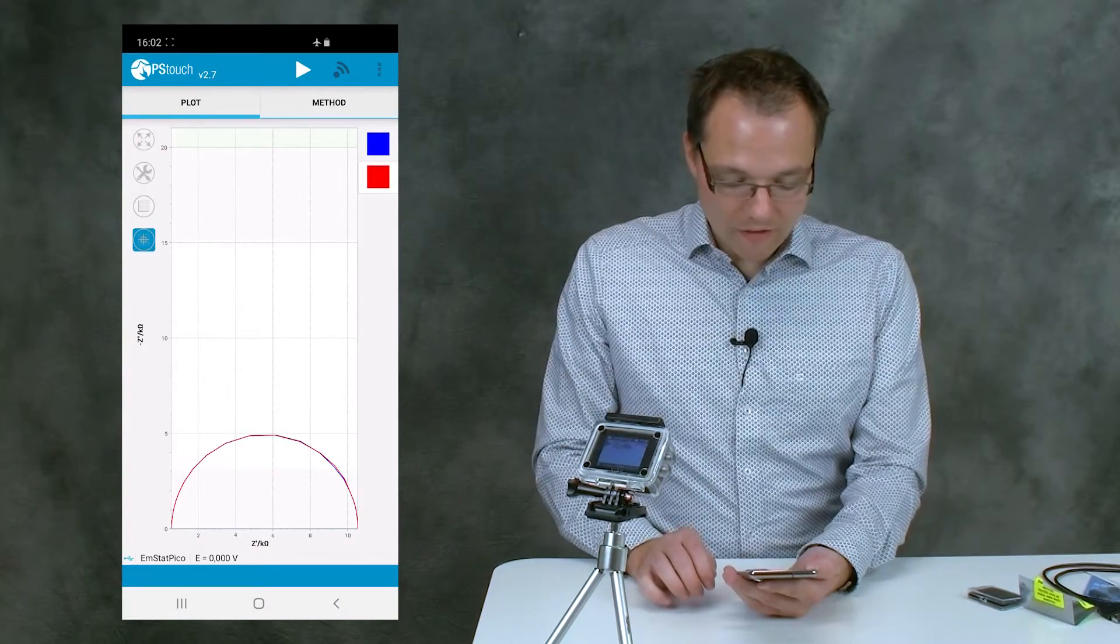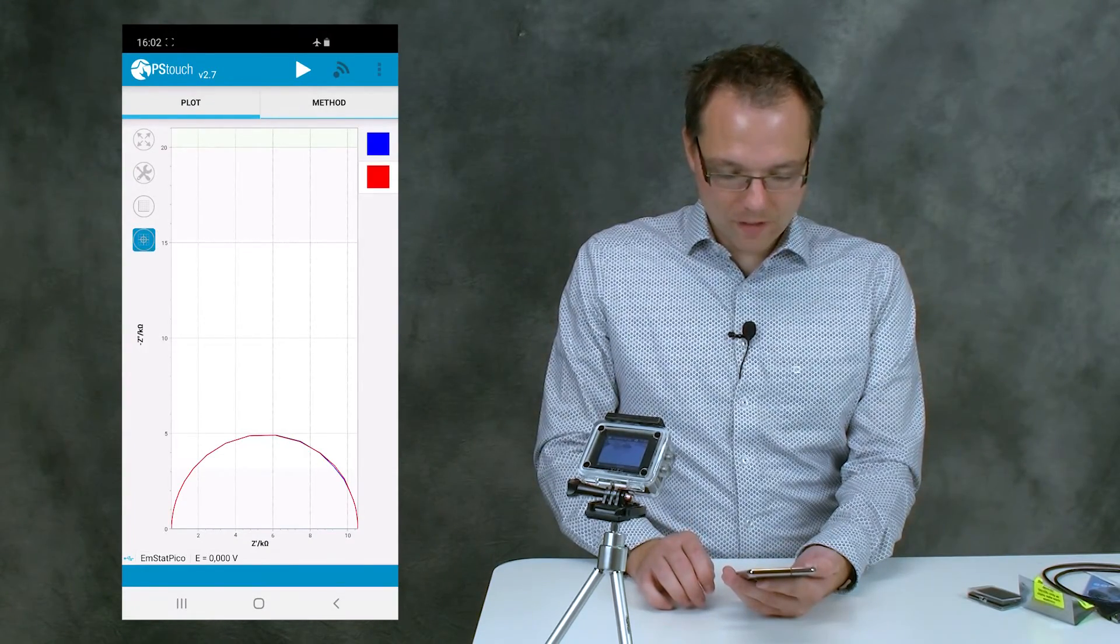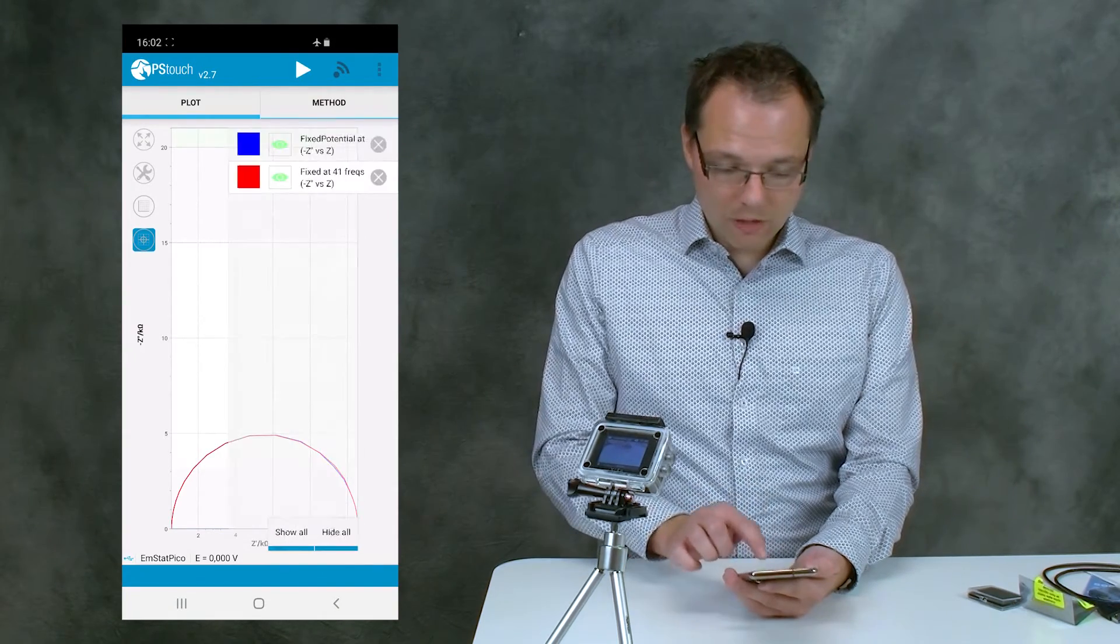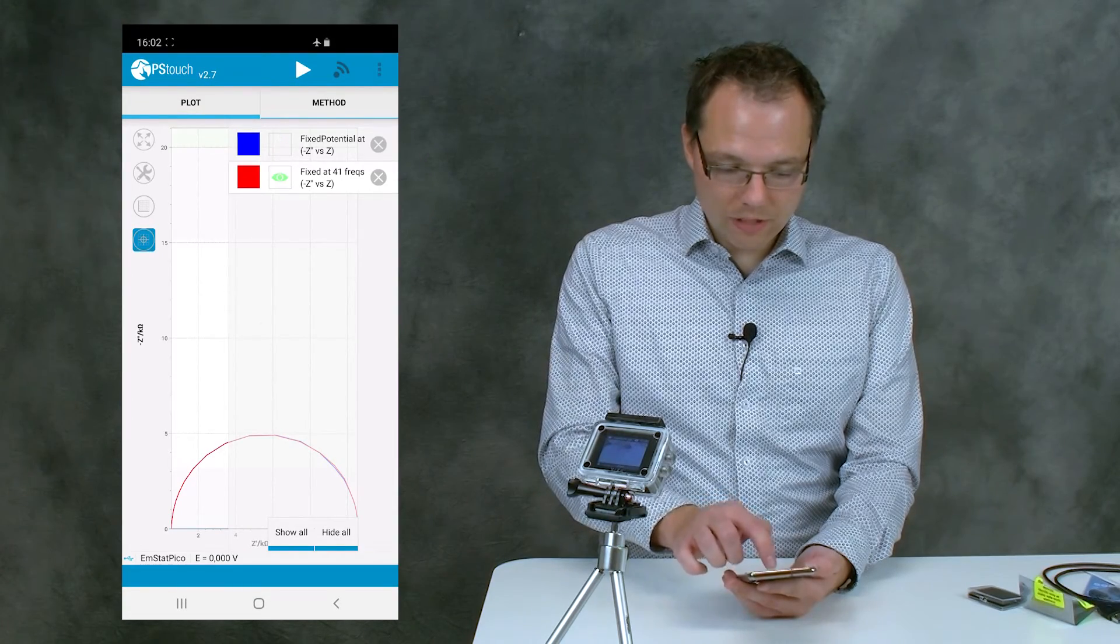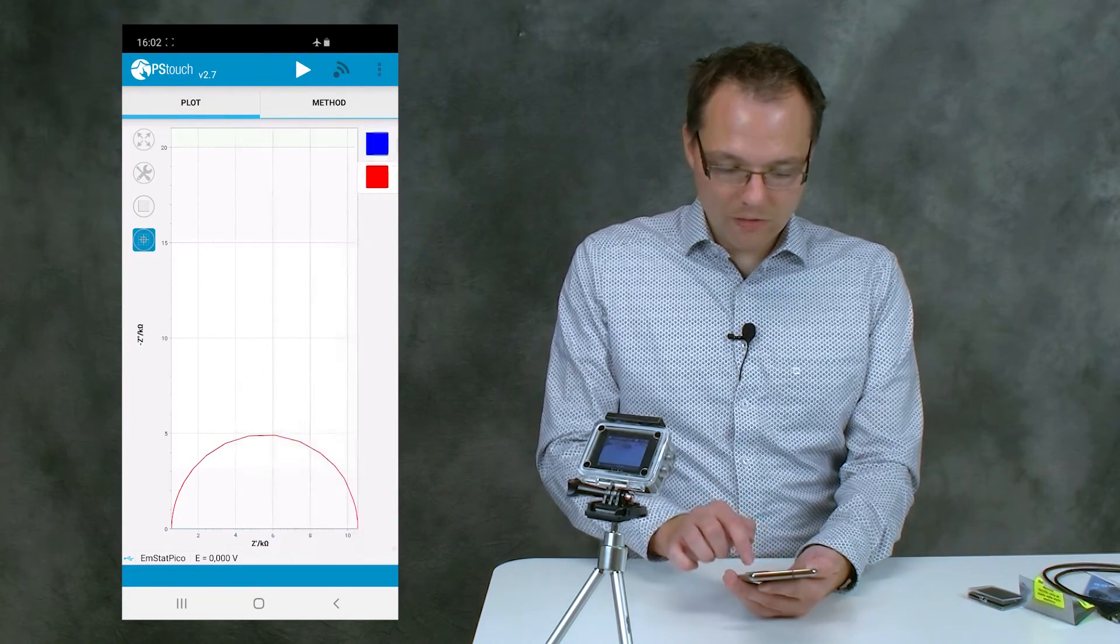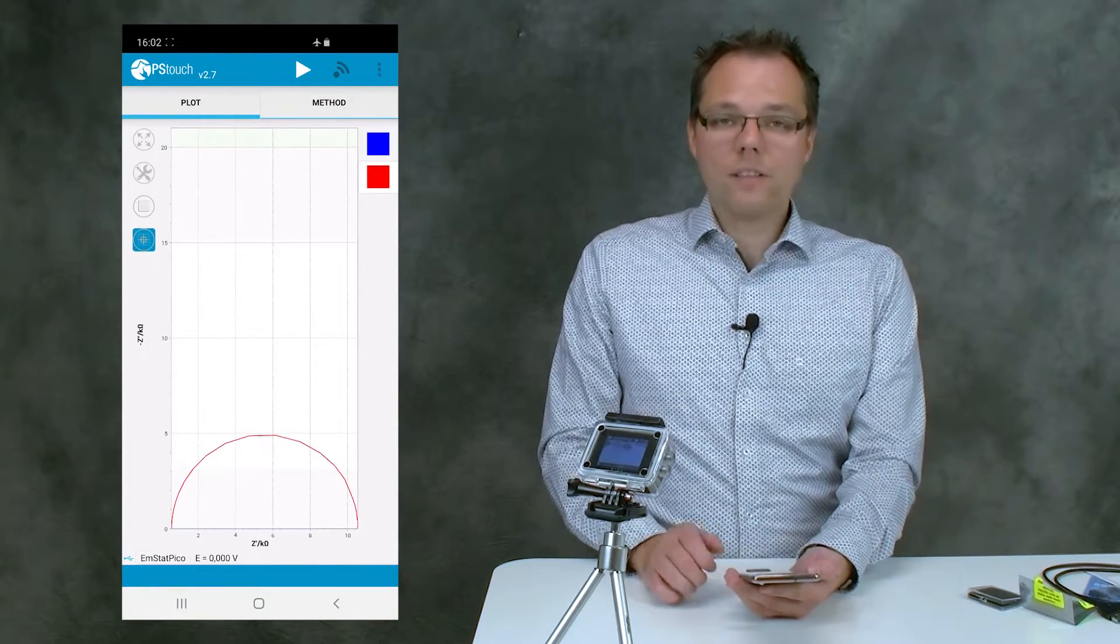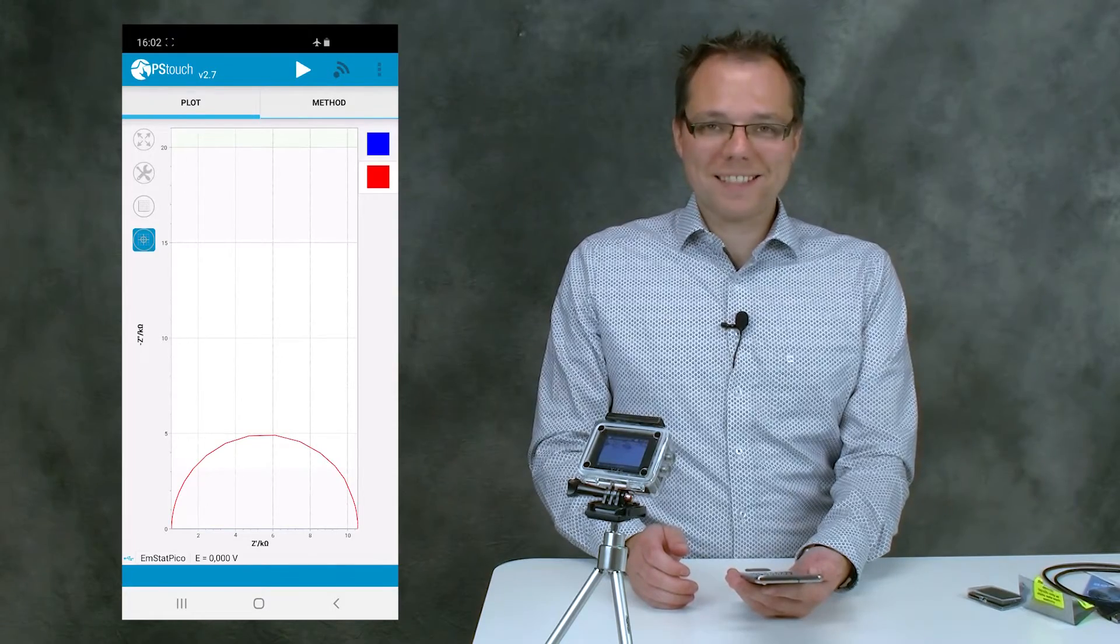Yes, so we recorded our final measurement, and now we can see that these two curves overlap. You can also, if you want, just swipe out the legend and press the little I button on the blue one so you only see the new measurement that you just made. And this way, you have easily made your first measurement with the Sensit Smart.